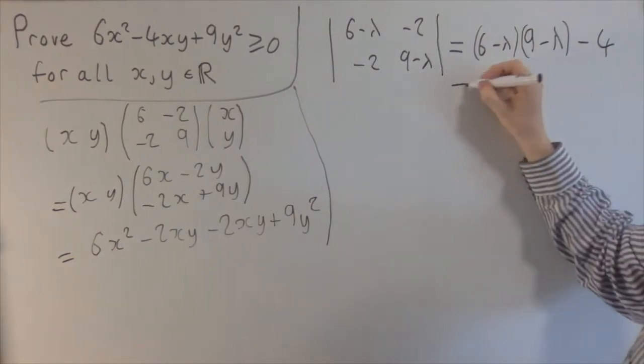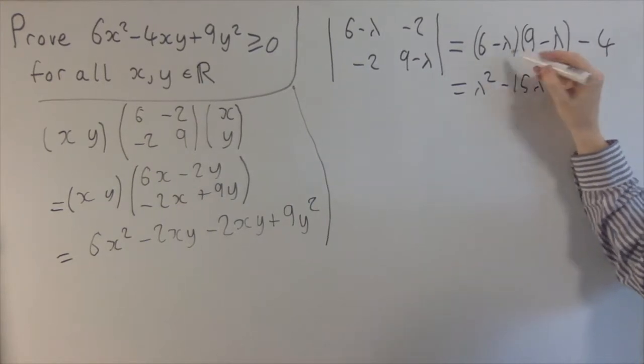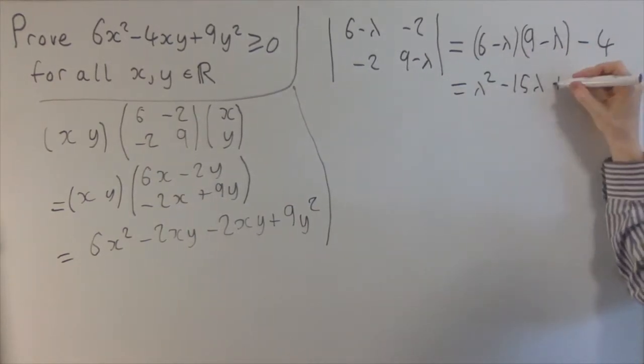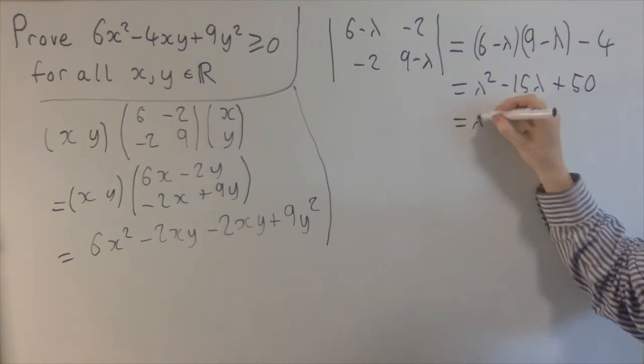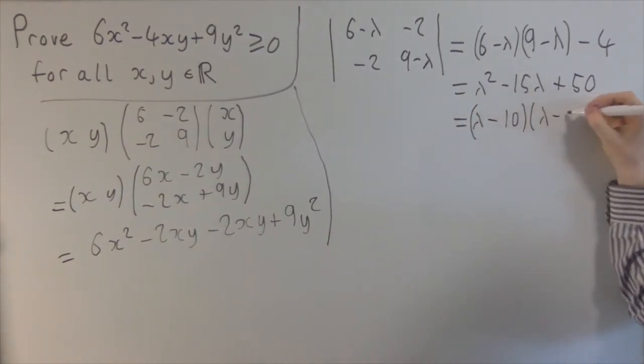Minus 4. So when we expand this, you get lambda squared minus 15 lambda, and then plus 54 minus 4, so plus 50. And then you can see this has a nice factorization: lambda minus 10, lambda minus 5.